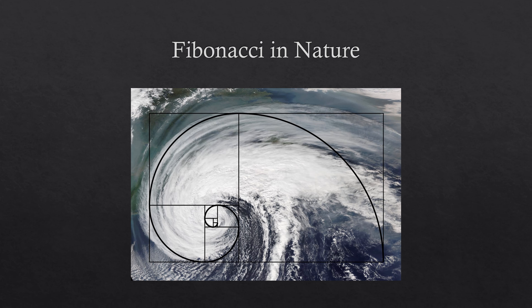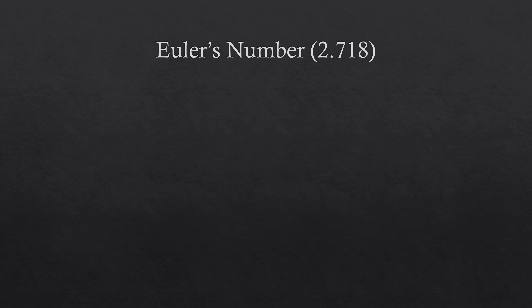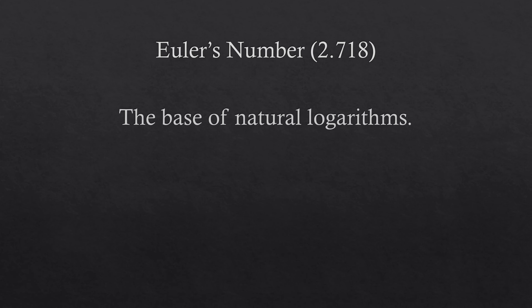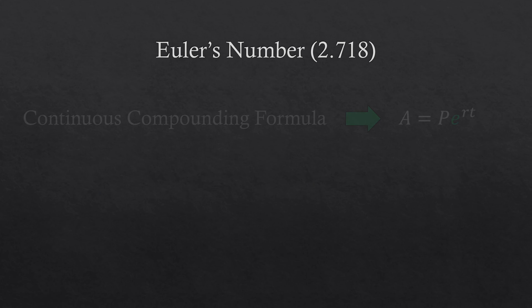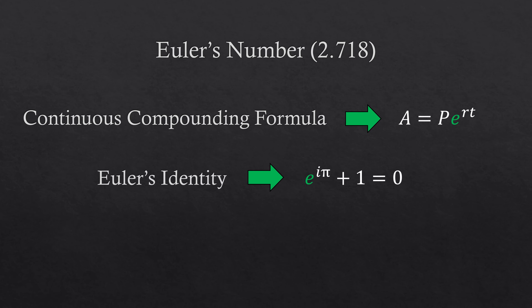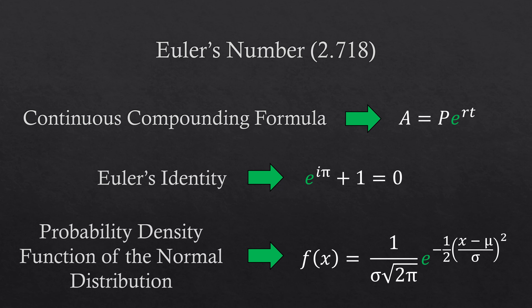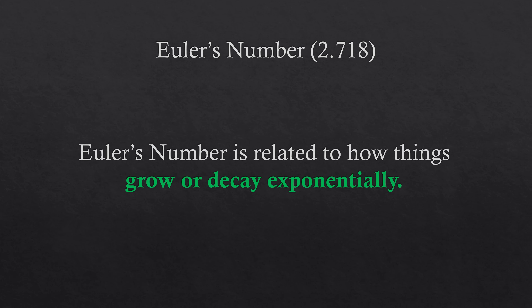However, the Fibonacci ratios are not the only constants that can be found in different places in nature. Here we begin to talk about another quite famous mathematical constant called Euler's number, which is approximately 2.718. Euler's number is the base of natural logarithms, and it can be found by the sum of an infinite series. The natural exponential function, f(x) = e^x, is the only function that equals its own derivative. Euler's number also appears in the continuously compounding formula, widely used in finance, in Euler's identity — which relates Euler's number, pi, and the imaginary unit i — and it's also found in the probability density function of the normal distribution. Generally speaking, Euler's number is related to how things grow or decay exponentially.